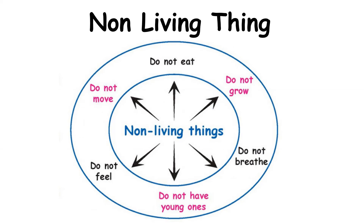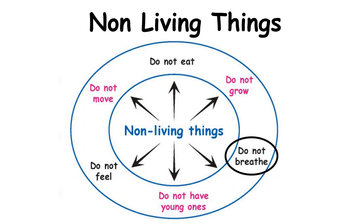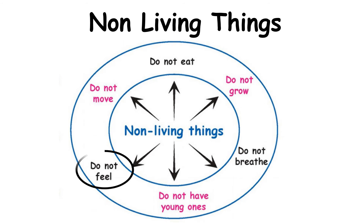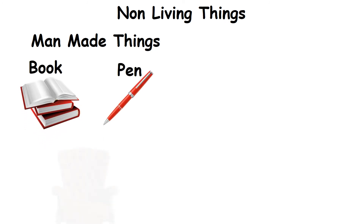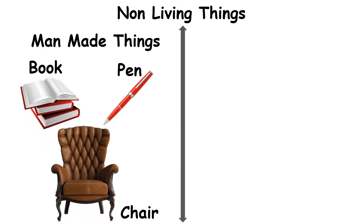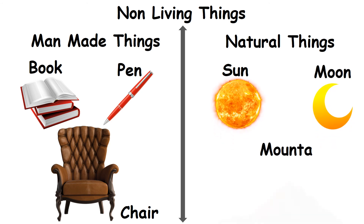Non-living things do not eat, do not grow, do not breathe, do not have young ones, do not feel, and do not move. Examples of non-living things are man-made things like books, pens, and chairs, and natural things like the sun, moon, and mountain.